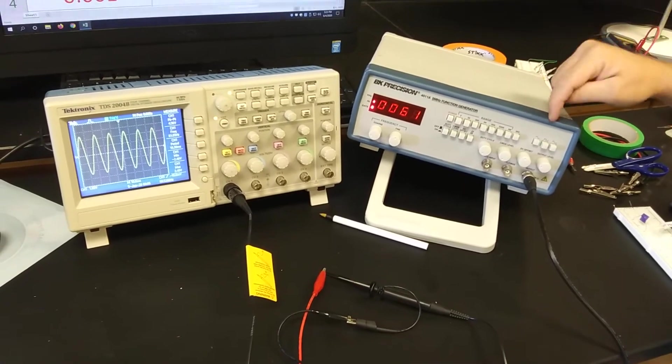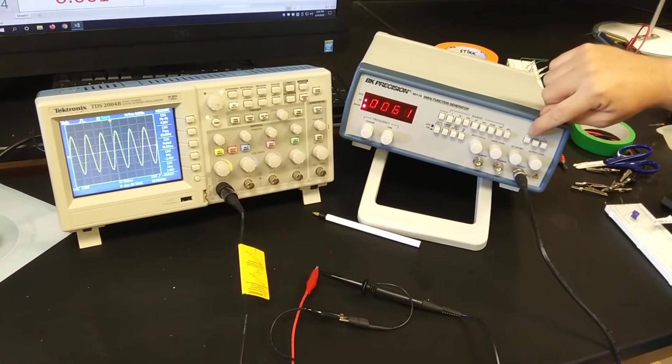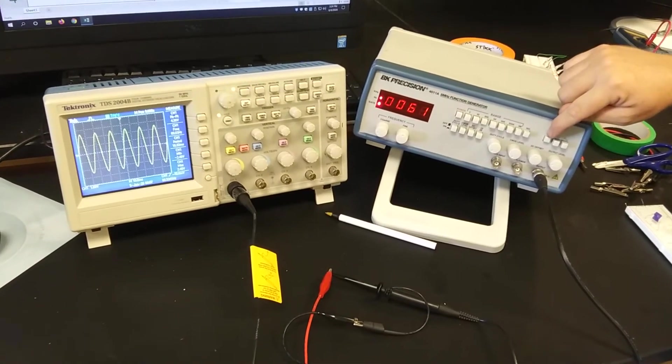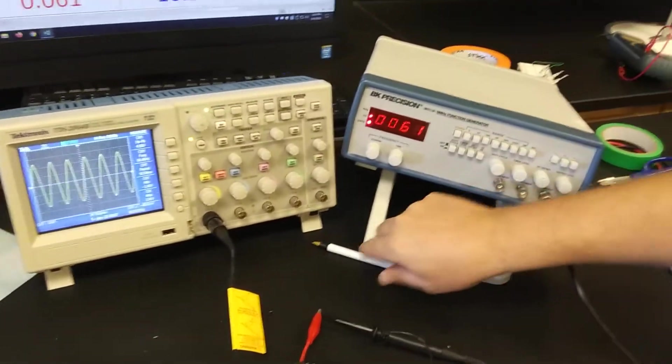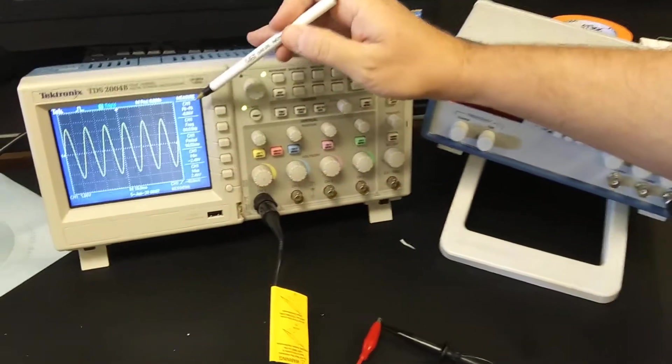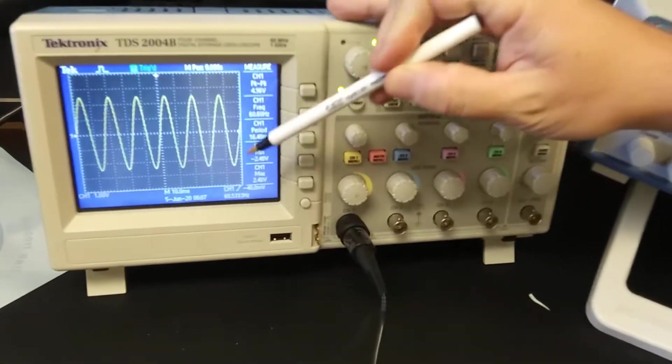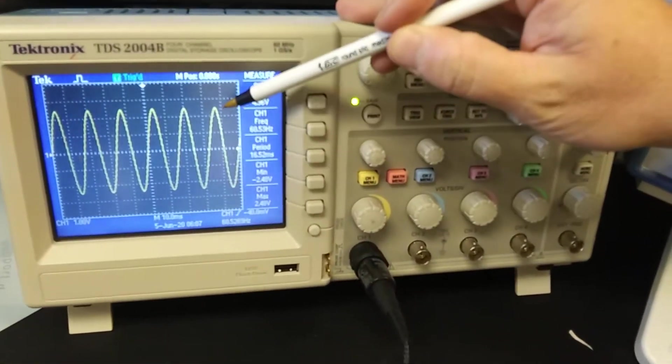So what we can see right now is this function generator is doing a sine wave output that's oscillating back and forth. It's a 5 volt peak to peak so it's 5 volts from the bottom to the top.